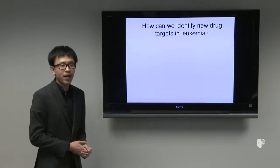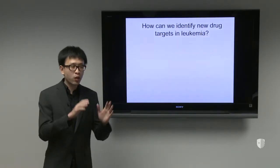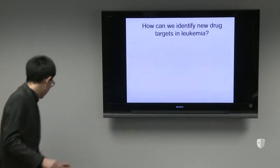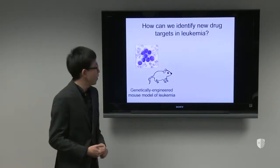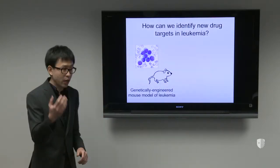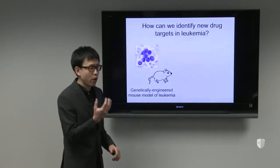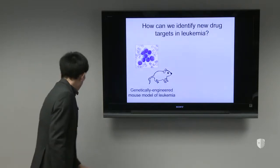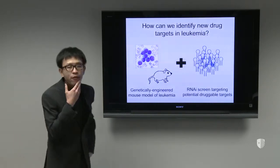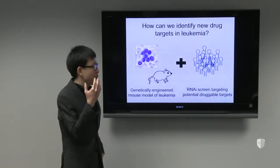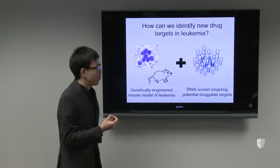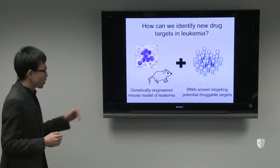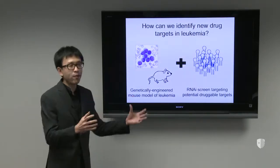So how can we identify new drug targets in leukemia? To address this question we need two things combined together. First, we need a model that can actually mimic the disease of leukemia in humans in a mouse, because we need an easy tool to study in an academic lab. Second, we want to find a target that actually matters and is potentially druggable by a small molecule — but without developing a molecule first, we want to know whether this target is worth working on. So we use another tool: RNAi screening, to find potential drug targets.